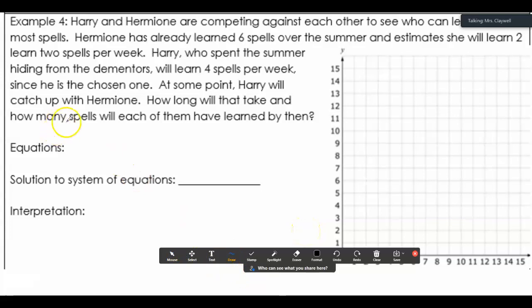So let's write an equation for each of them. Let's do Hermione. She's doing 2 per week and started at 6, so I'm going to go ahead and start at 6.